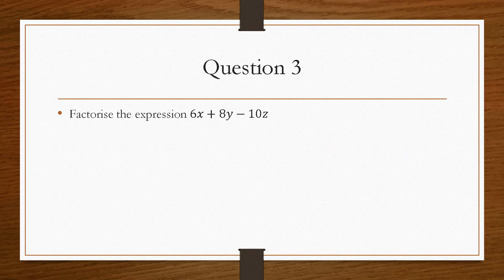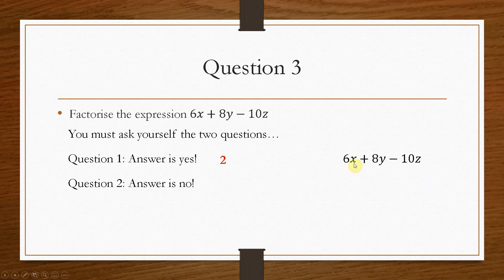And then lastly, question number 3 is factorise this expression here. And again, you must ask yourself the two questions. Does it have any numbers that are common? Yes, in this case it is 2. Does it have any letters? No, because each of these has a different letter. If that was a y, and that was zy, then y would be common to all three terms. But here, each term has a different letter, so there is no letters that are common. So our common factor, in this case, is just 2. So divide each of these terms by 2,